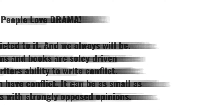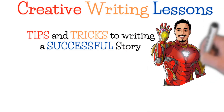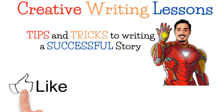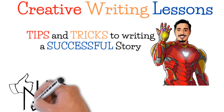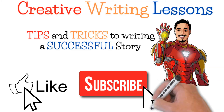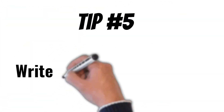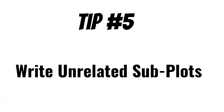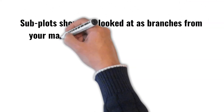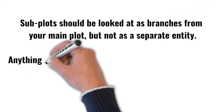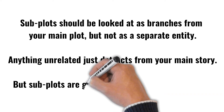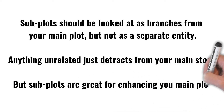If you're getting great content and information, please hit that like and subscribe button so I can continue giving you these tips and tricks to writing a successful story, whether it's a screenplay or a book. Tip number 5: write unrelated subplots. Subplots should be looked at as branches from your main story, but not as a separate entity. Anything unrelated just detracts from your main story, but subplots are great for enhancing your main plot if you use them wisely.